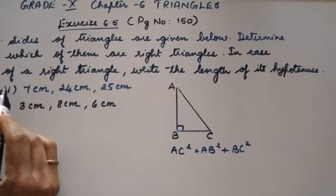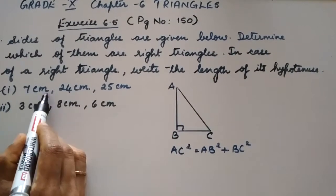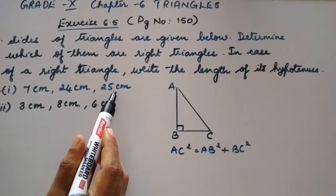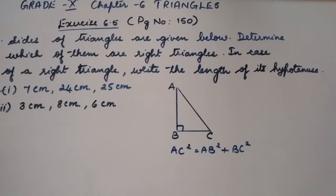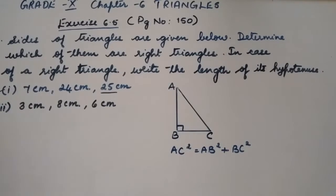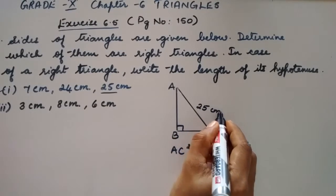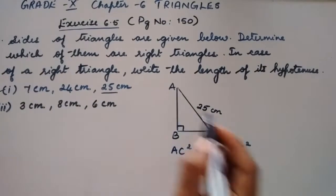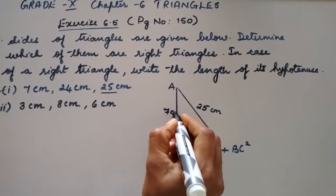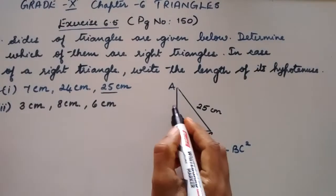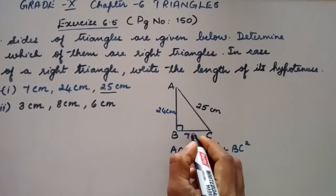Now let us solve the first one. The sides of the triangle are 7 cm, 24 cm, and 25 cm. In a right angled triangle, the hypotenuse will be the longest side. The longest side here is 25 cm. So AC is the hypotenuse which is 25 cm, and the other two sides are AB = 24 cm and BC = 7 cm.